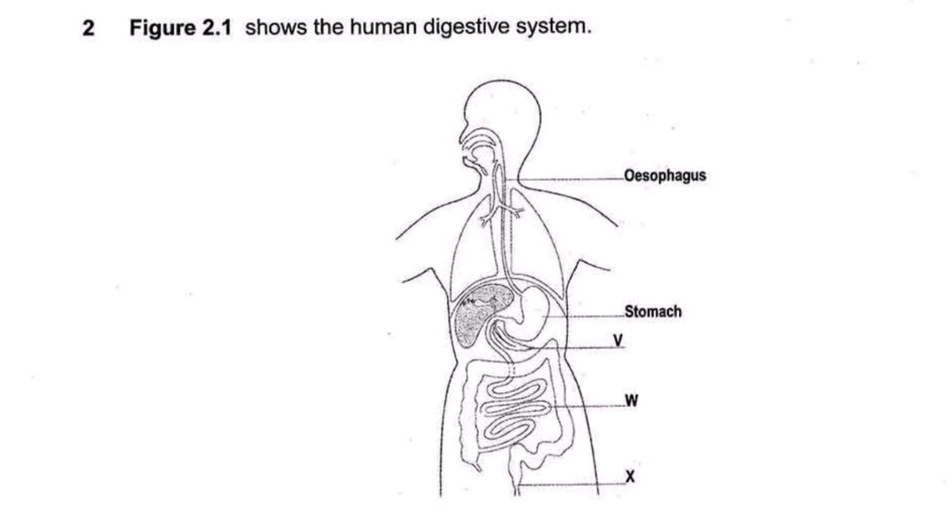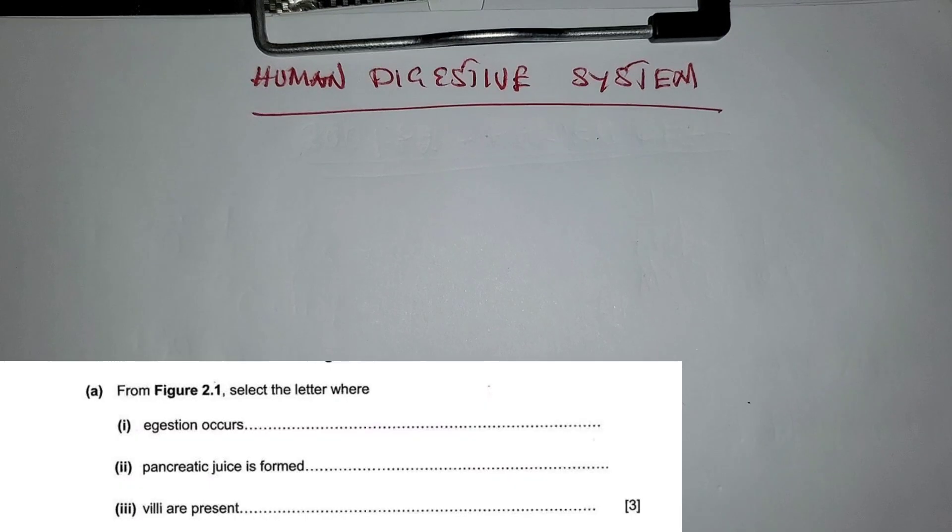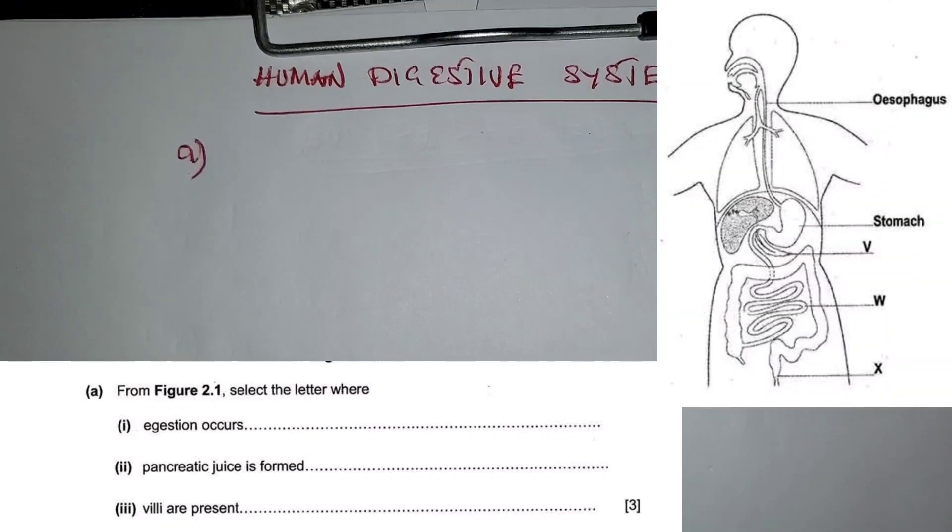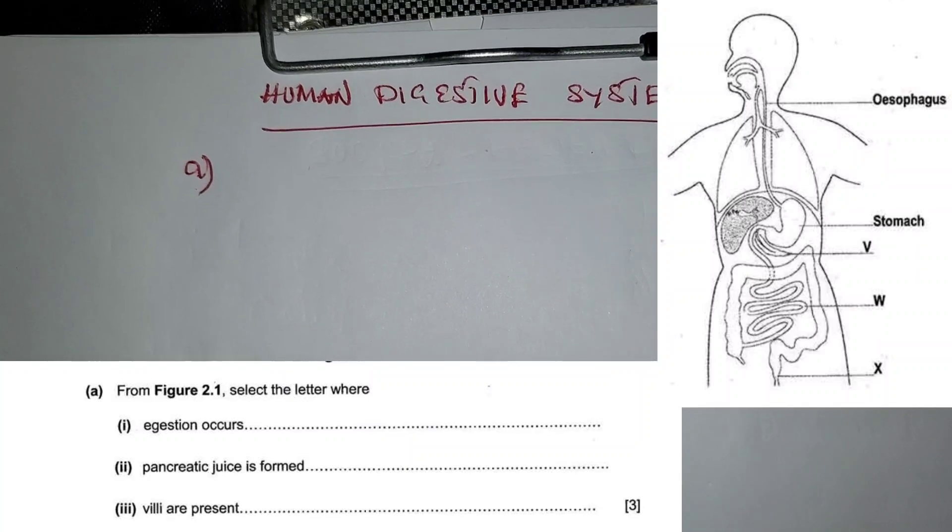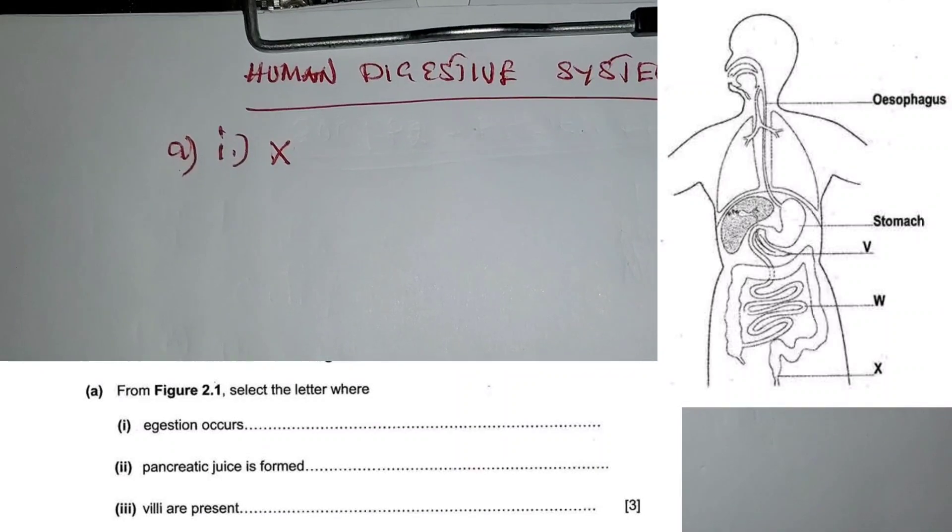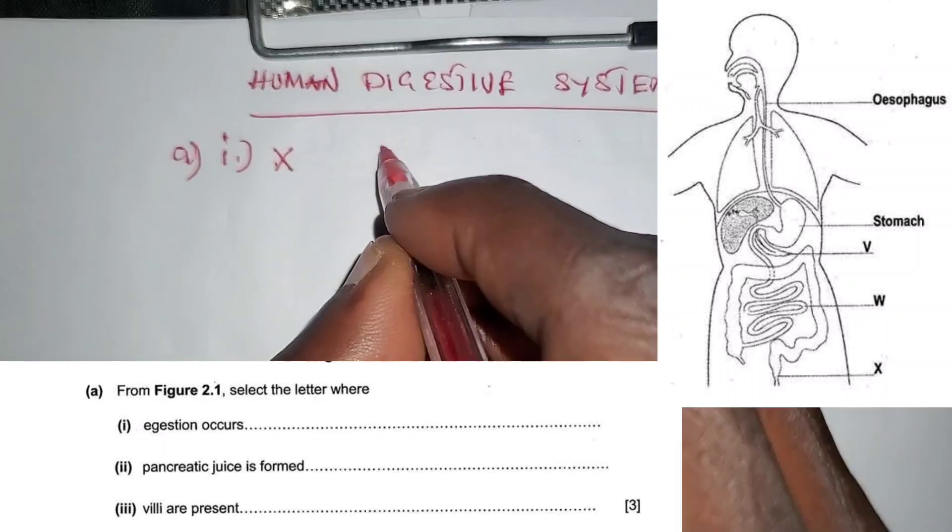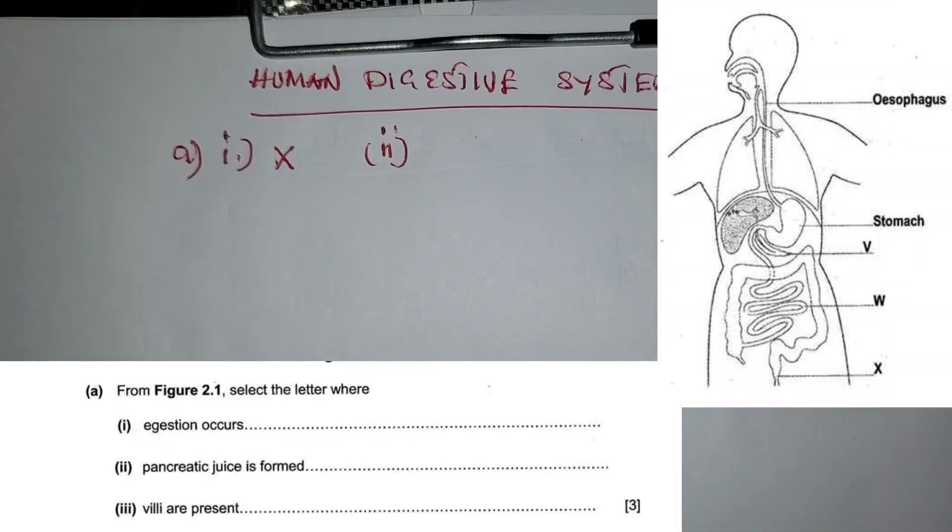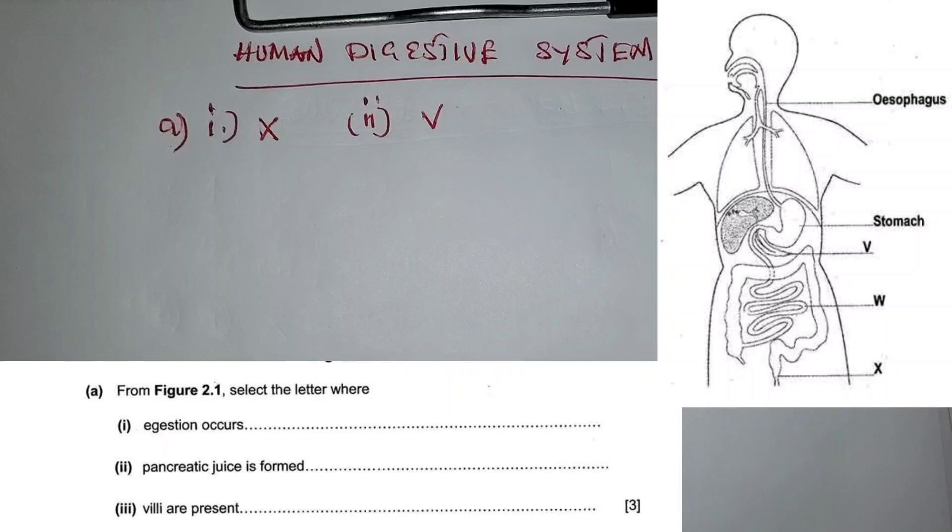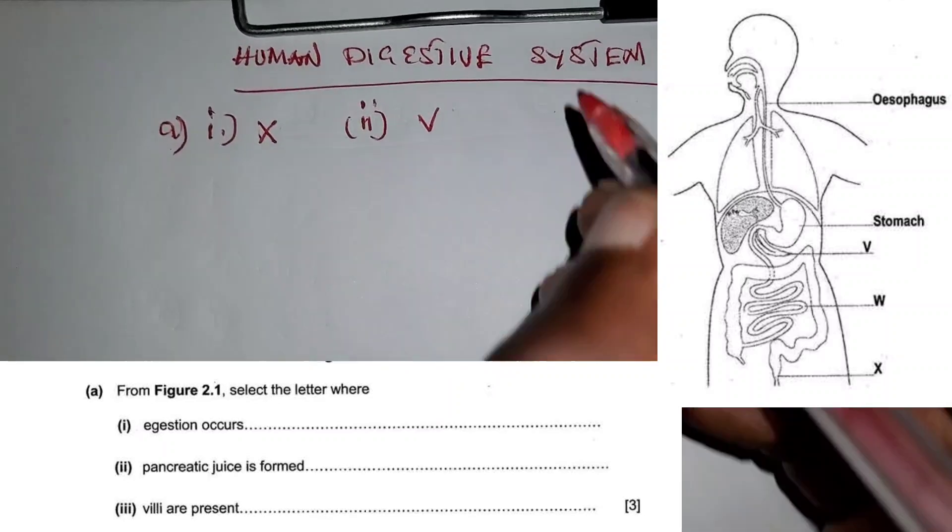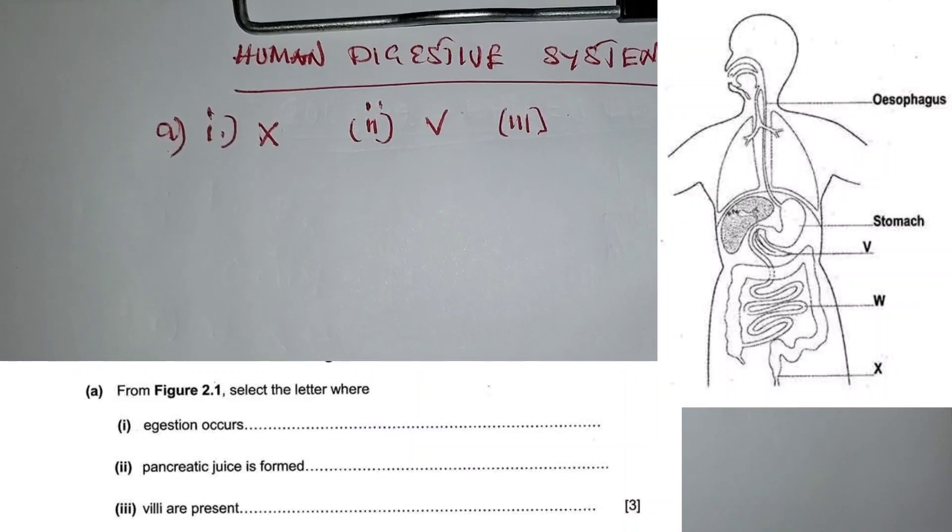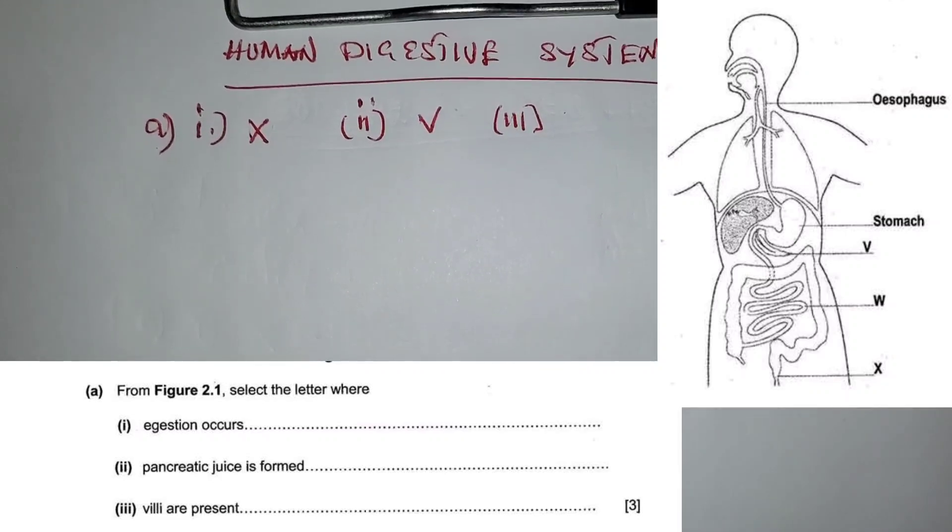Now let's look at the questions. Question A: from figure 2.1, select the letter where ejection occurs. So ejection occurs at X. Number two, select the letter where pancreatic juice is formed. Pancreatic juice is formed in the pancreas, and the pancreas is V. Number three, where villi are present. Villi are present in the ileum or small intestines, and W points at small intestines.